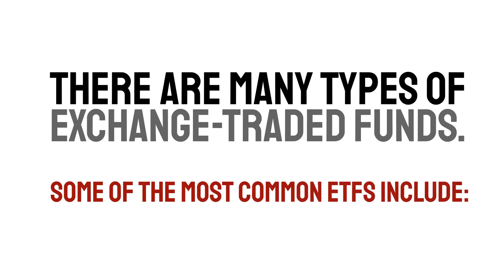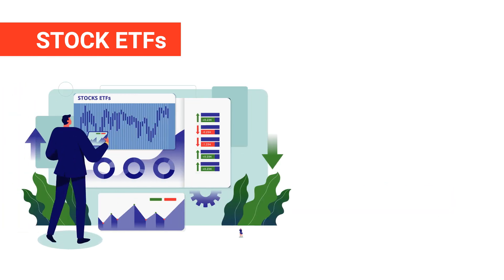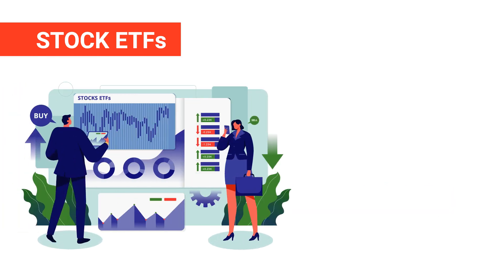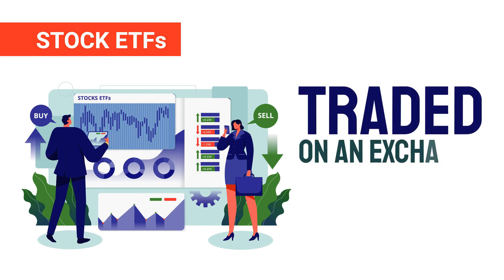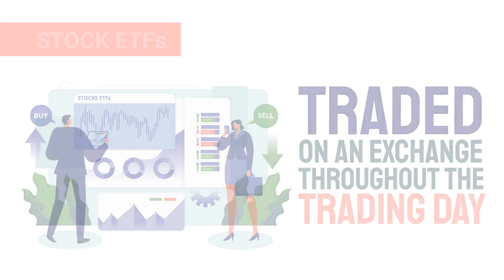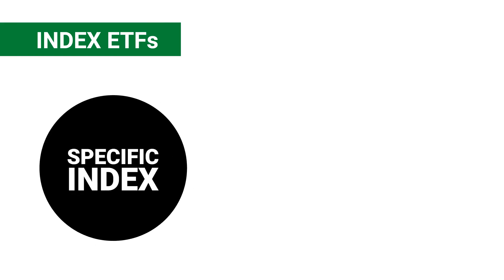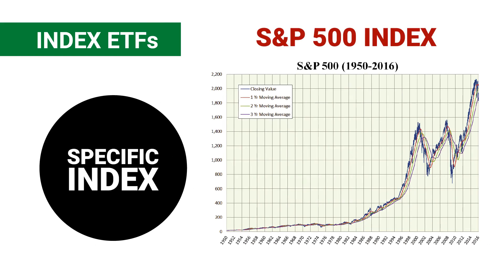Types of ETFs: there are many types of exchange traded funds. Stock ETFs hold a particular portfolio of equities or stocks and are similar to an index. They can be treated like regular stocks in that they can be sold and purchased for a profit and are traded on an exchange throughout the trading day. Index ETFs mimic a specific index such as the S&P 500 index.